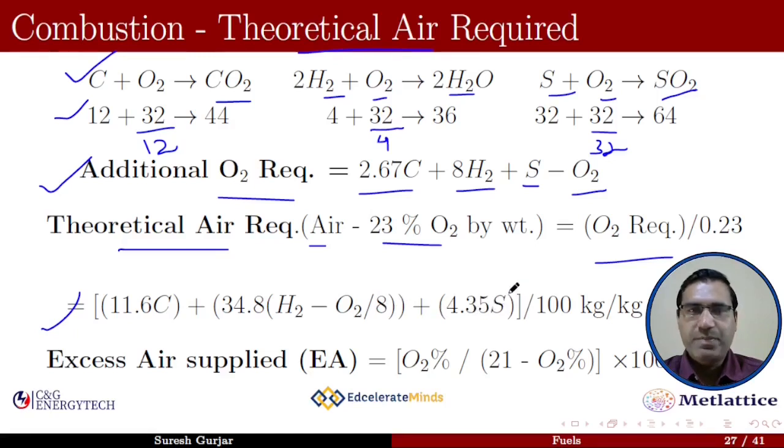Next is the calculation of excess air supplied, which can be calculated with the help of the actual O2 percentage in the flue gas. It is given by O2 percentage divided by 21 minus O2 percentage.